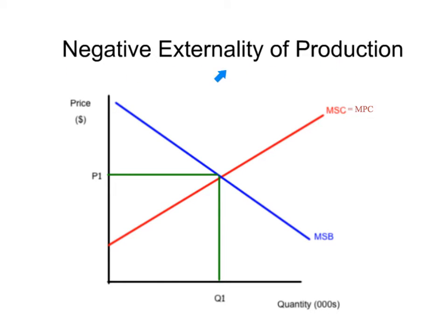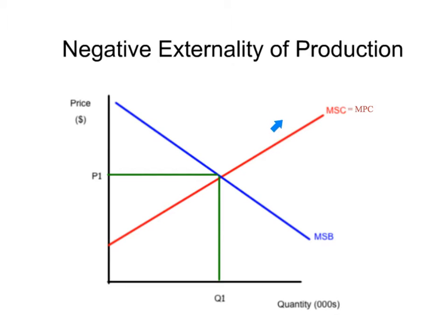Whether it's a positive externality of production or a negative externality of production, it's going to do something with the supply curve — what we used to call the supply curve — which is the marginal social cost and the marginal private cost curve. When these line up, the logic is that when there is perfect allocative efficiency, these things line up and they're actually two lines on top of one another.